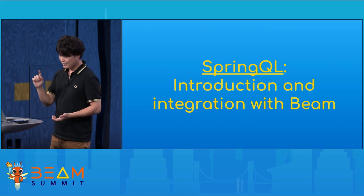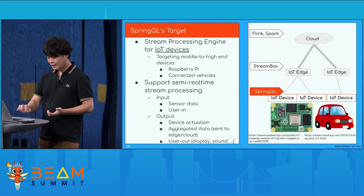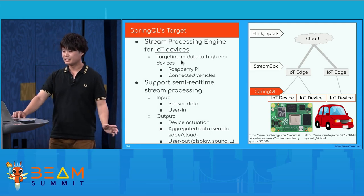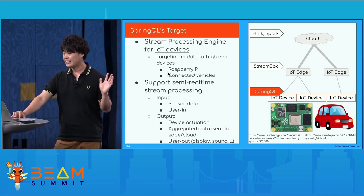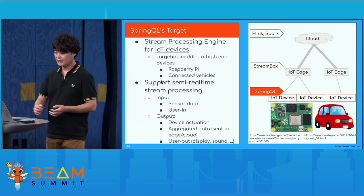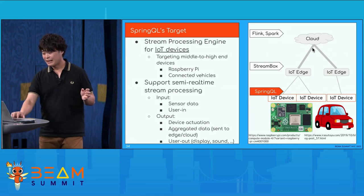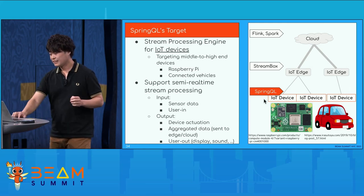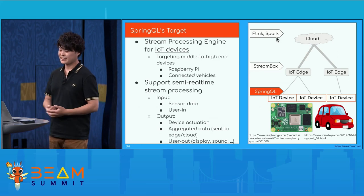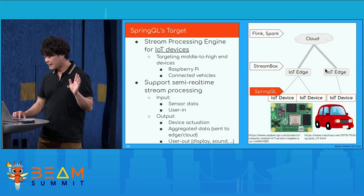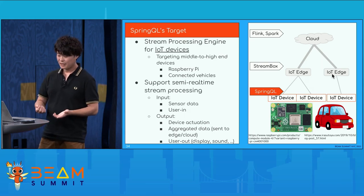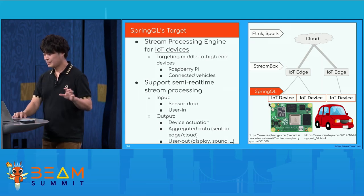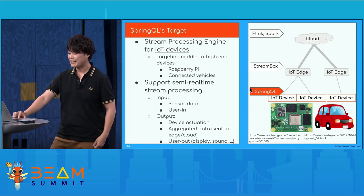I have some time remaining, so I will talk about SpringQL. SpringQL is a stream processing engine for IoT devices. Its target devices are middle to high-end IoT devices like Raspberry Pi and connected vehicle computers. We have a diagram showing cloud, IoT edges — also called FOGs — and IoT devices. Flink, Spark, and other distributed stream processing engines run in the cloud. In FOG or IoT edges, StreamBox and Scabbard are a little bit famous in the research field. But I would like to develop a stream processing engine for IoT devices, and its name is SpringQL.